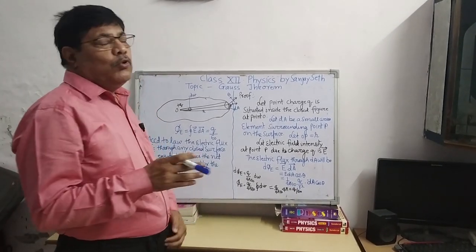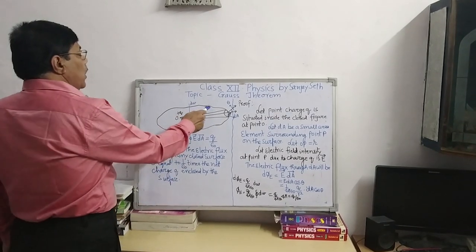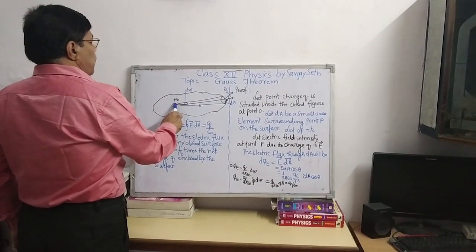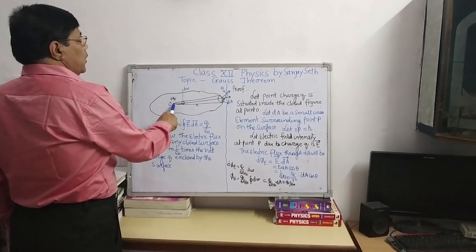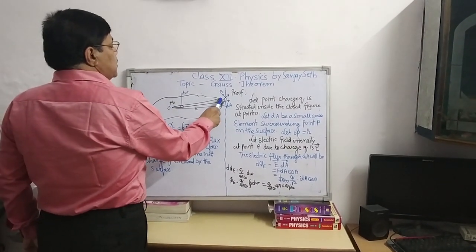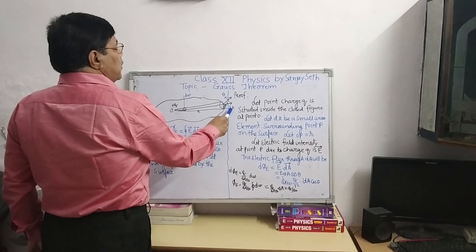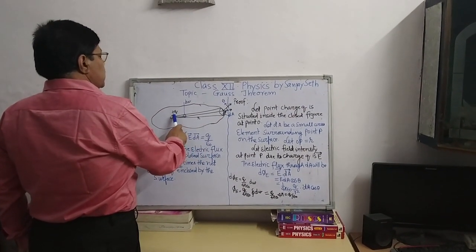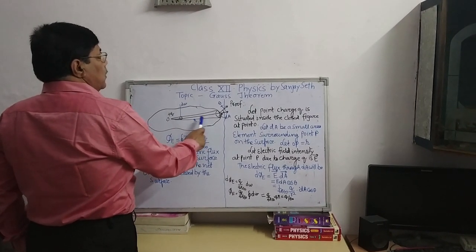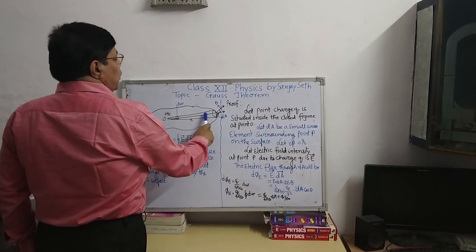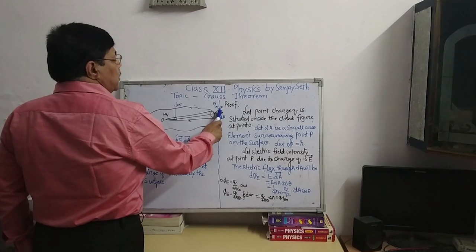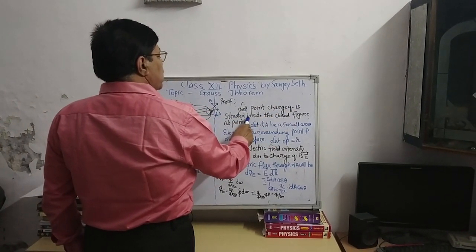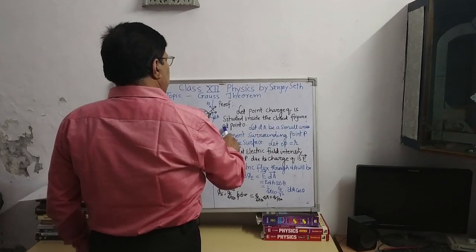Now I am going to give you the proof. For the proof, I have drawn a closed figure. A charge Q is placed inside it, and there is an enclosed area element dA — a very small segment. The distance from the center O to the surface element is R. I have drawn the axis, and the angle between the field and the area element is theta. So let point charge Q be situated inside the closed figure at point O.